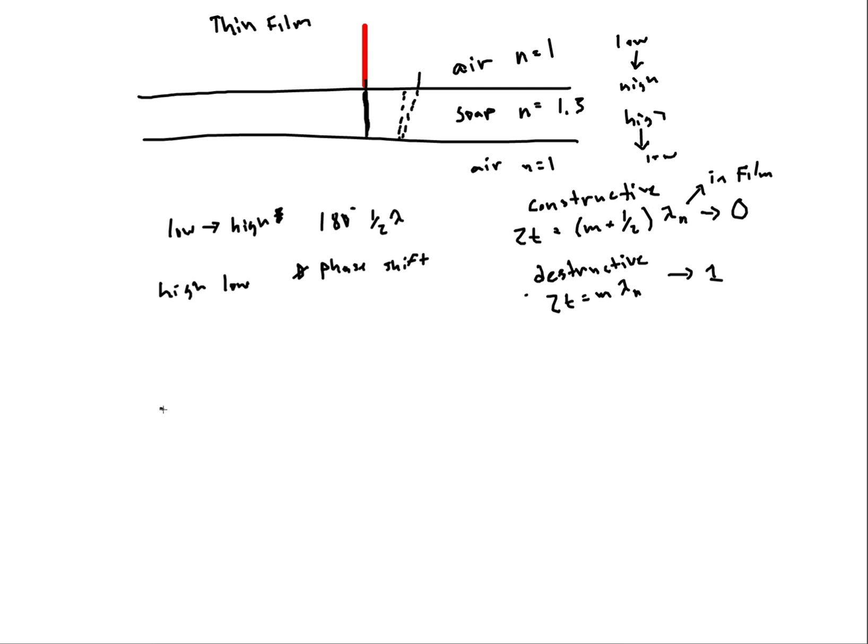Now if we have a film problem where we are moving from air and then we're going into soap and then we're going into glass, so here my index of refraction is 1.3, here n is 1 and here n is 1.5. Well here I'm going from low to high but here I'm going from low to high. So there is a phase shift here and there is another phase shift here.